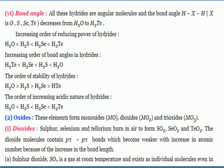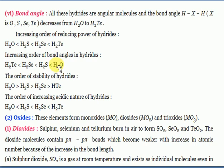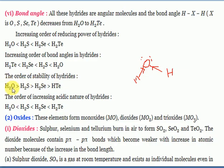Bond angle: all these hydrides have a bent (V-shape) geometry. Water has the highest bond angle of 104°28'. Oxygen is highly electronegative, so bond pair electrons move towards oxygen, causing maximum bond pair-bond pair repulsion, giving water the largest bond angle. The order of reducing power increases down the group: H₂O < H₂S < H₂Se < H₂Te (tellurium hydride has highest reducing power).